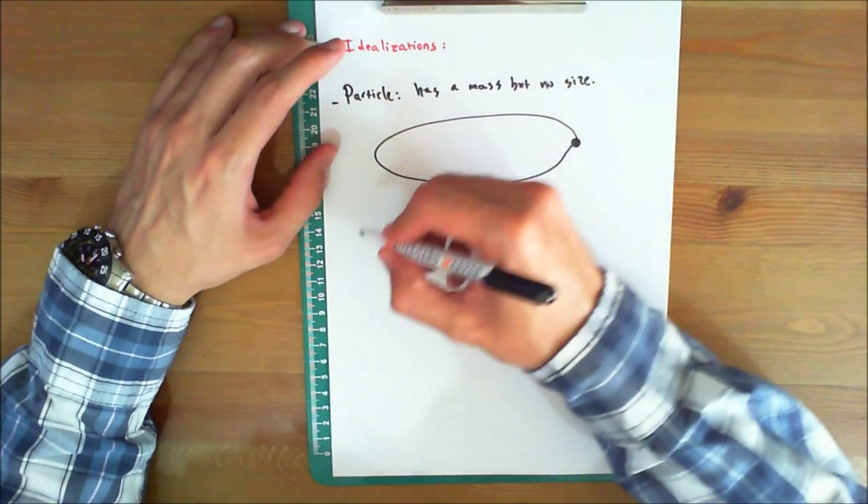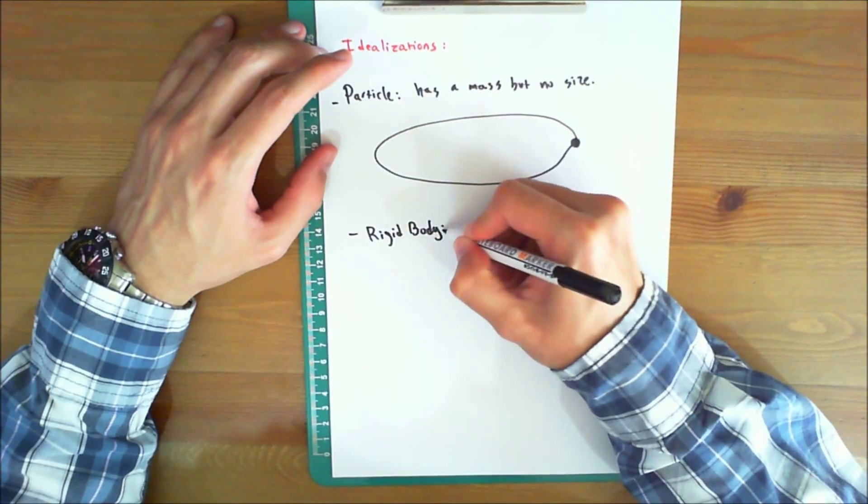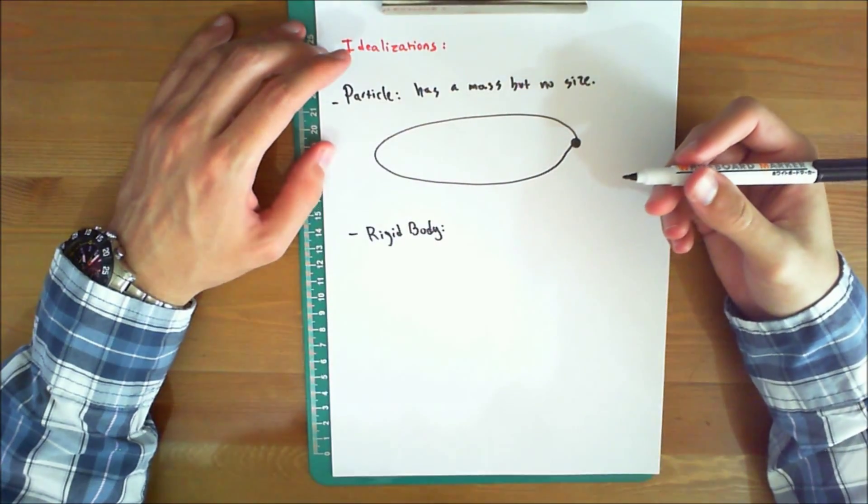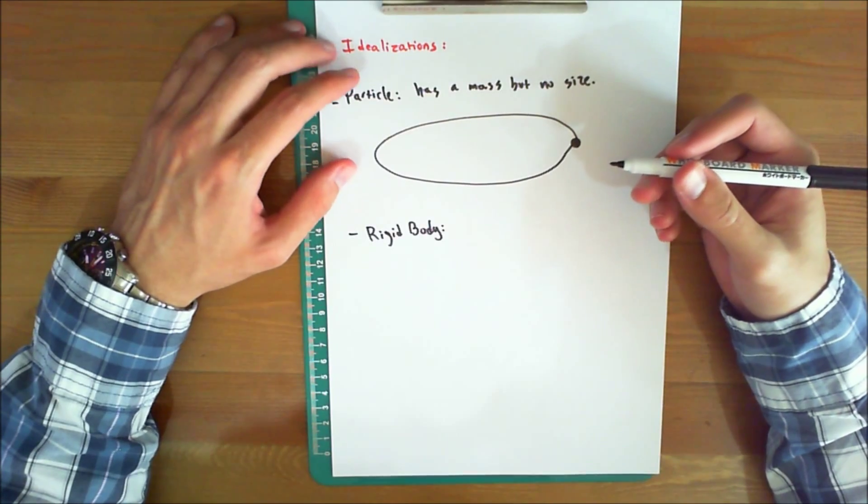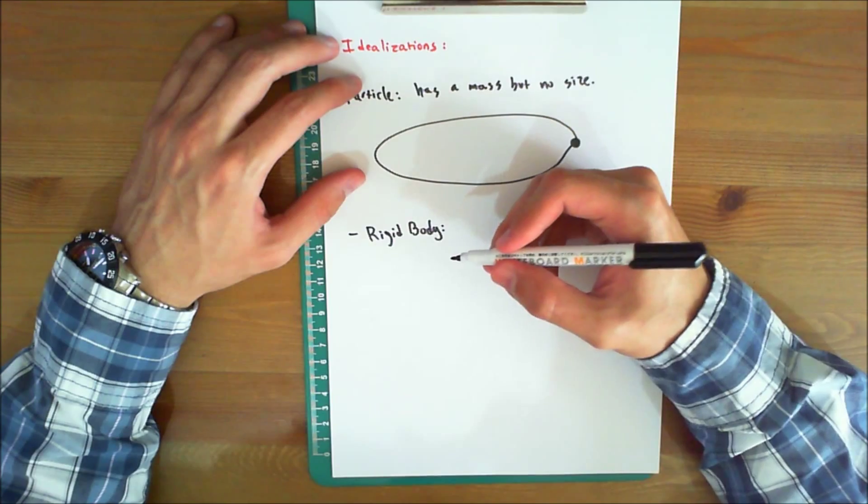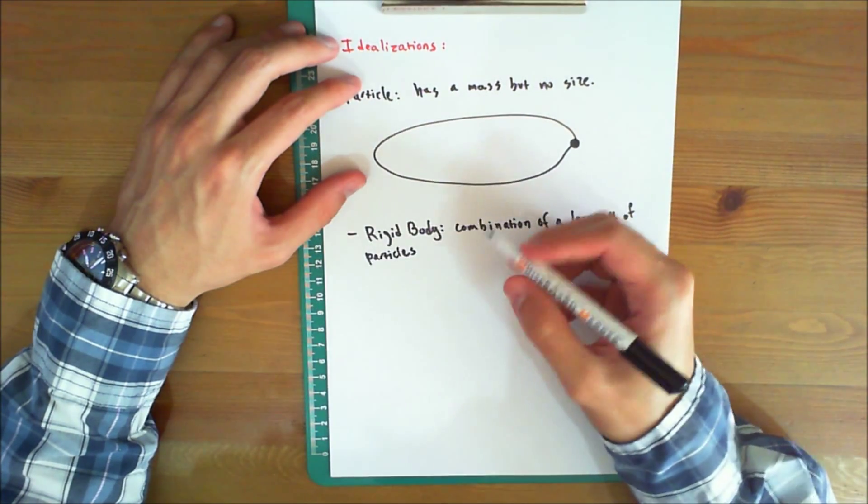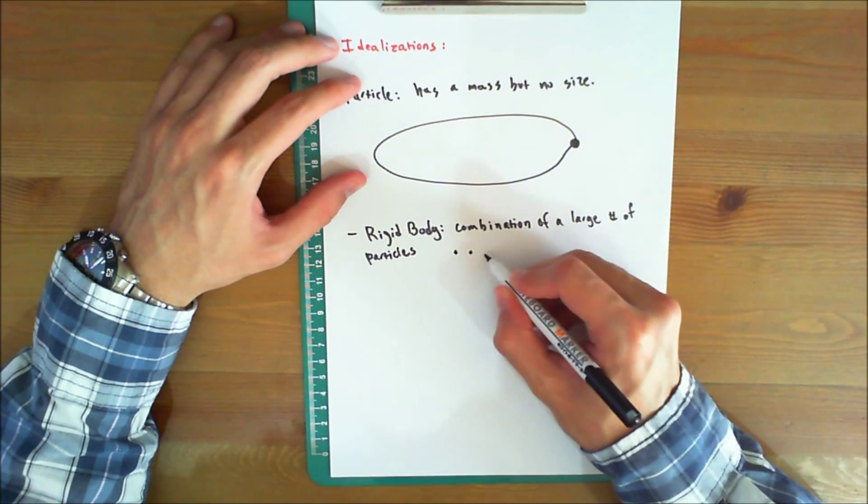The next idealization is the rigid body. Now, a rigid body can be considered as a combination of a large number of particles in which all the particles remain at a fixed distance from one another. And they're at a fixed distance from each other.